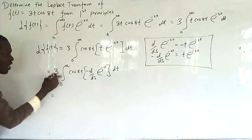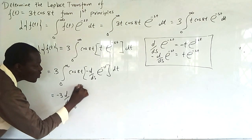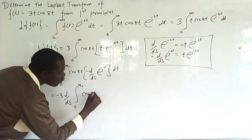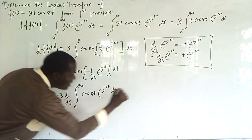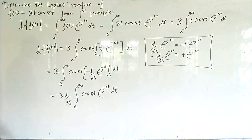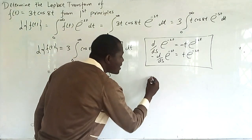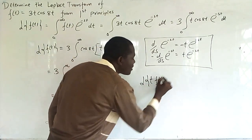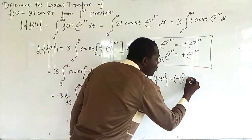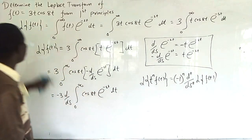When you take -d/ds outside times 3, you get -3·d/ds of the integral from 0 to infinity of cosh(t)·e^(-st) dt. What has happened is that we have eliminated t. The Laplace transform of t^n·f(t) is (-1)^n · d^n/ds^n of the Laplace of f(t).